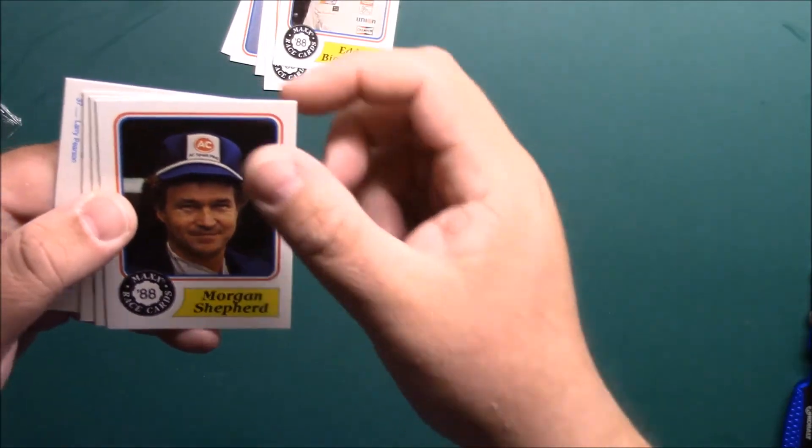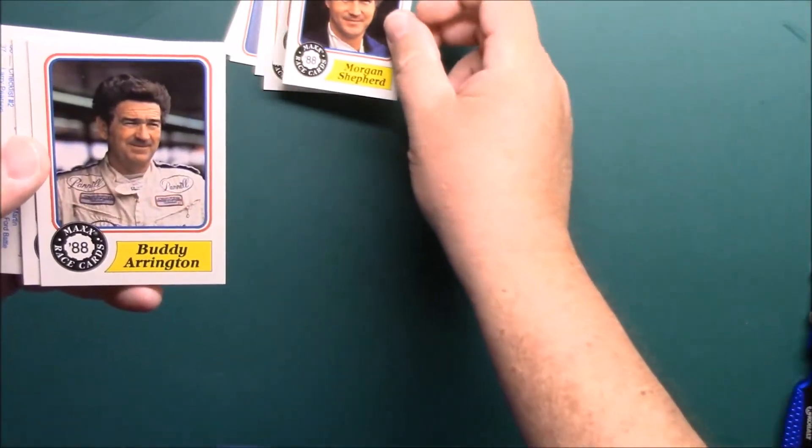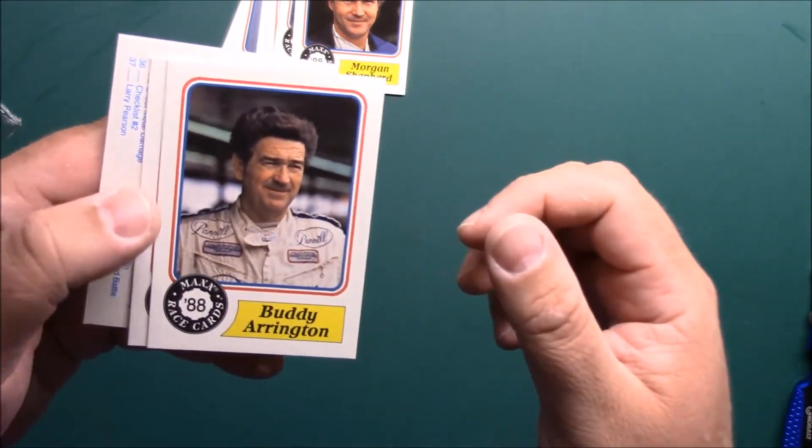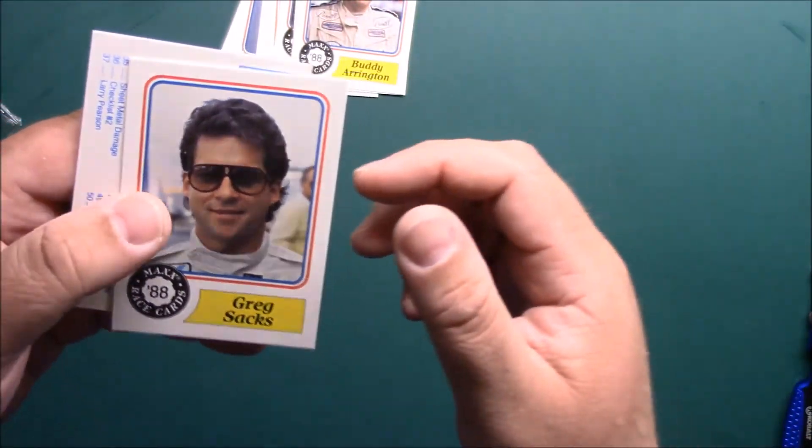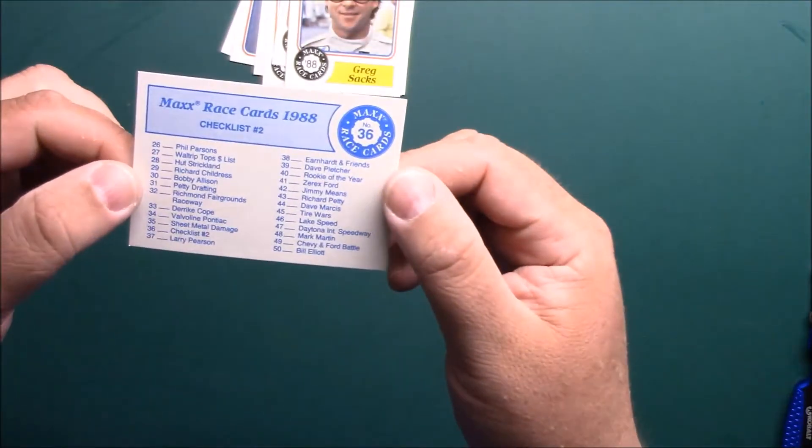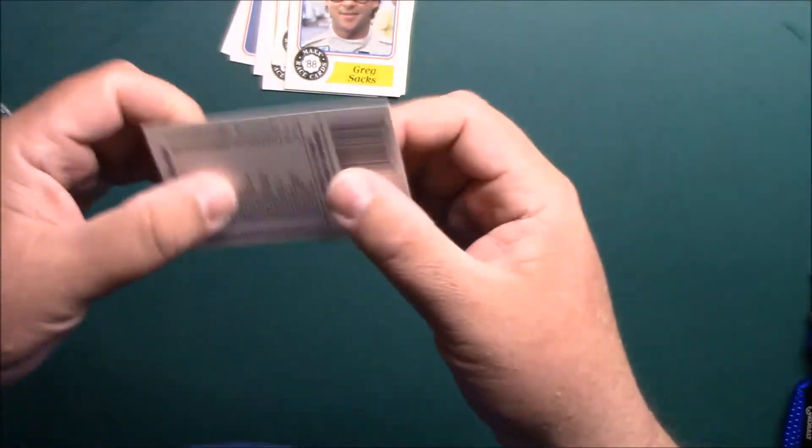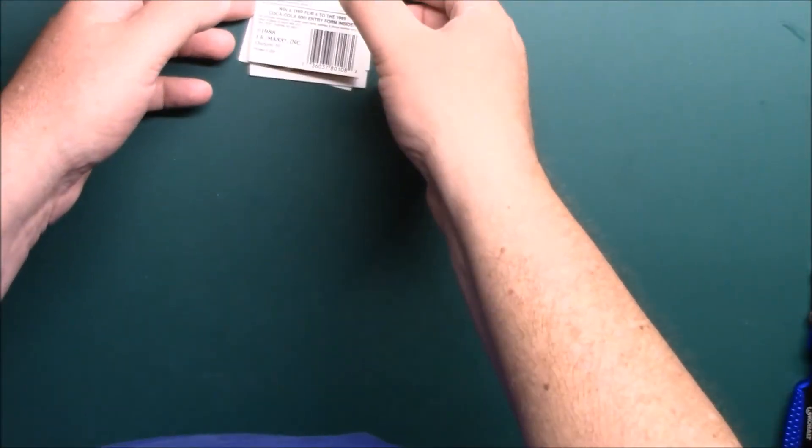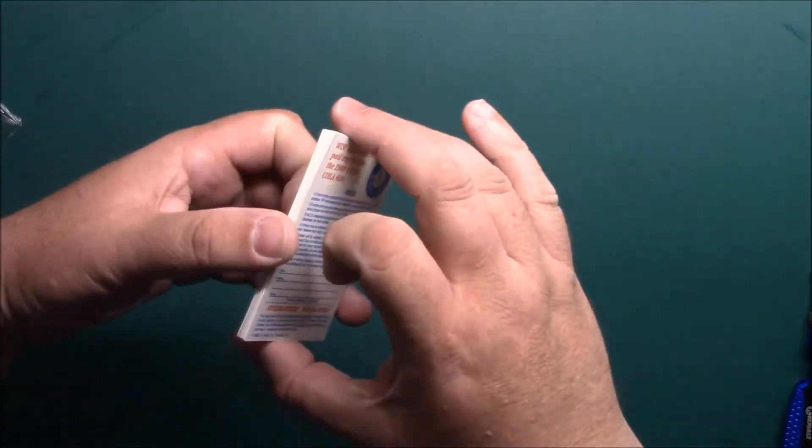Buddy Arrington and Greg Sacks, and then we have our checklist card number two. I have a set of this, but I would like to make me a really, really nice set. So that's kind of my goal with opening these.